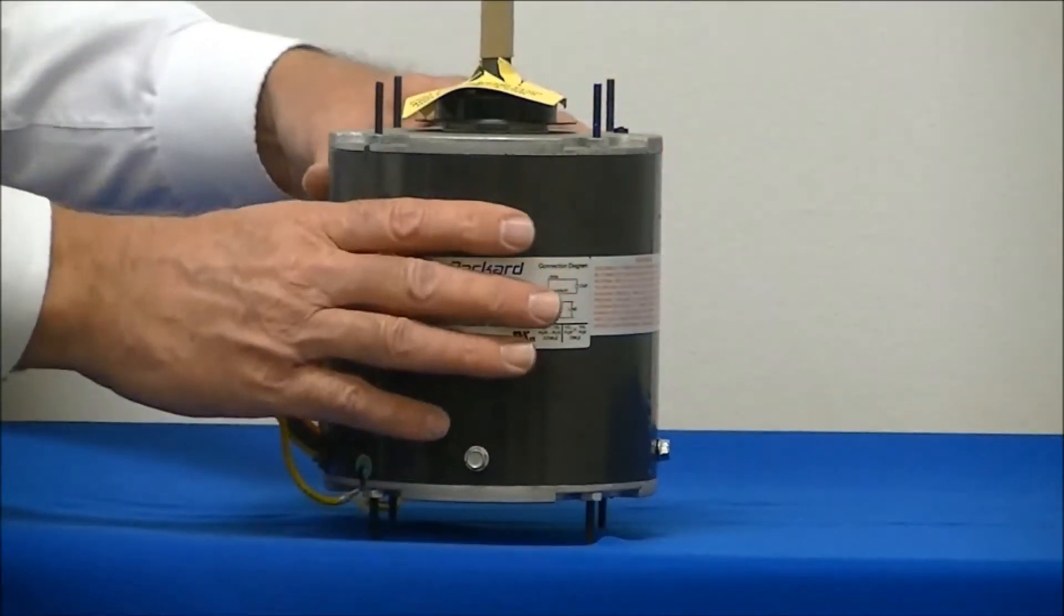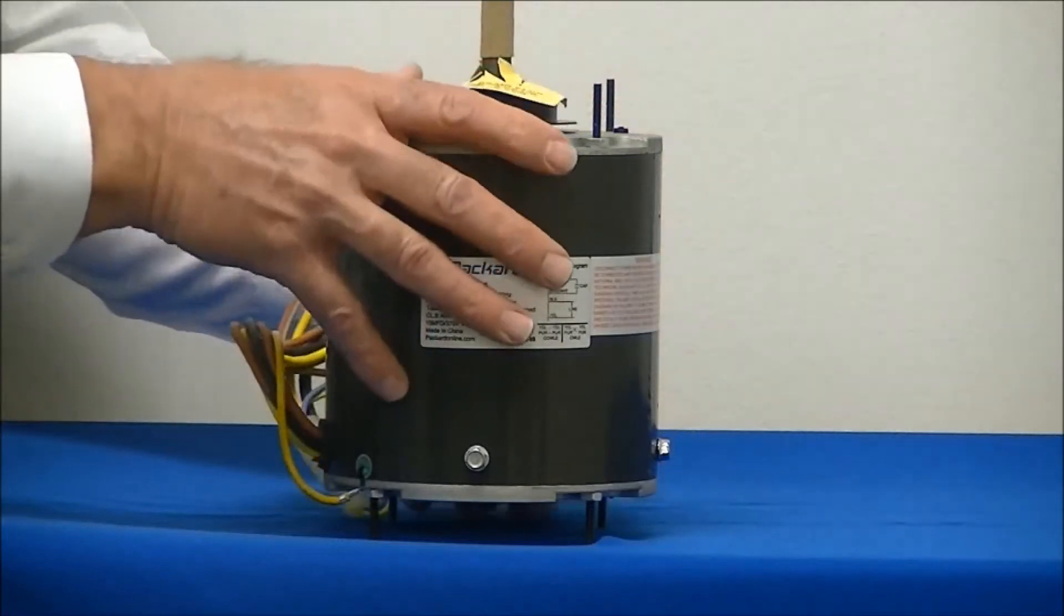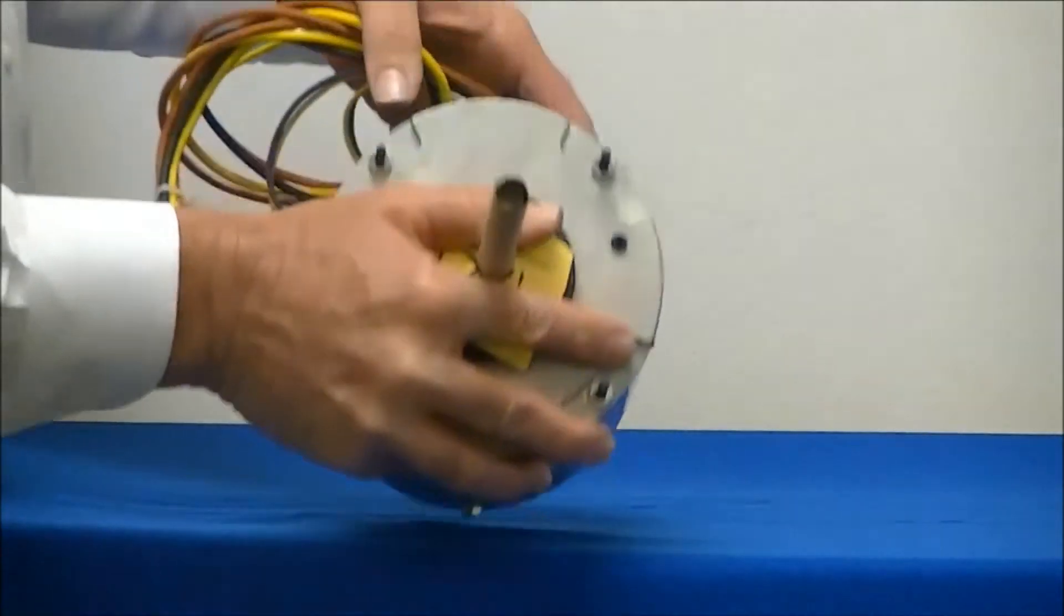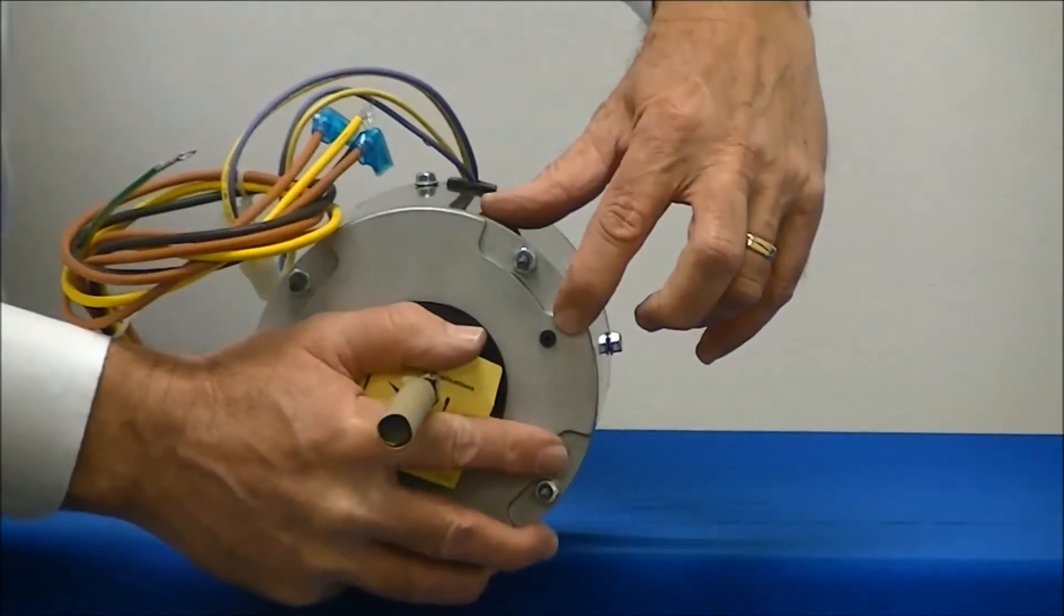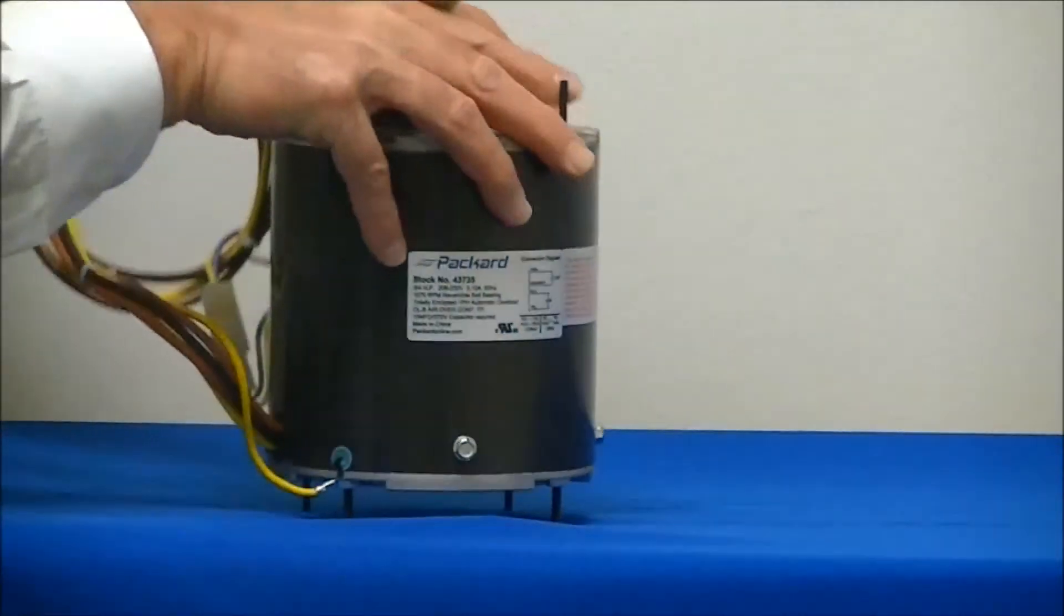Aftermarket condenser fan motors are equipped with drain plugs on each end bell. A little black rubber plug is the drain plug that's on each end bell.